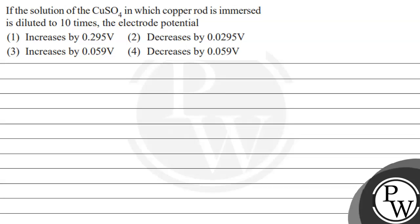Hello, let's read this question. If the solution of the copper sulfate in which copper rod is immersed is diluted to 10 times, the electrode potential increases by 0.295V, decreases by 0.295V, increases by 0.059V, decreases by 0.059V.